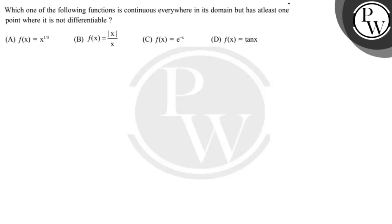Let's read the question: which one of the following functions is continuous everywhere in its domain but has at least one point where it is not differentiable? Option A: f(x) equals cube root of x. Option B: f(x) equals mod x divided by x. Option C: f(x) equals e raised to minus x. Option D: f(x) equals tan x.